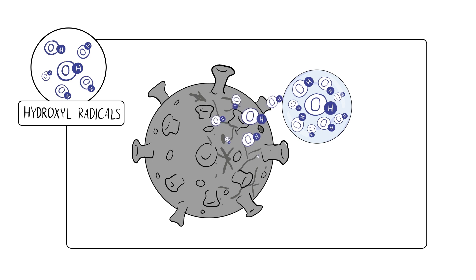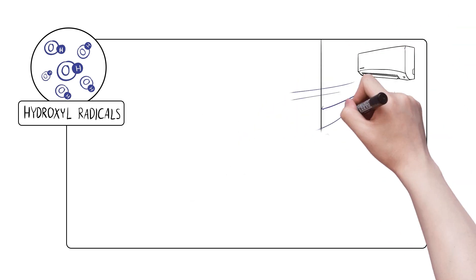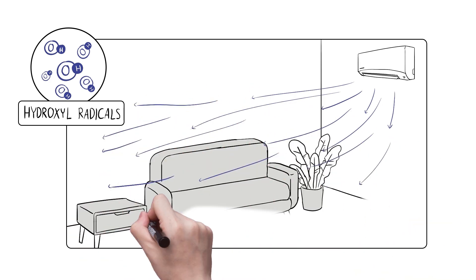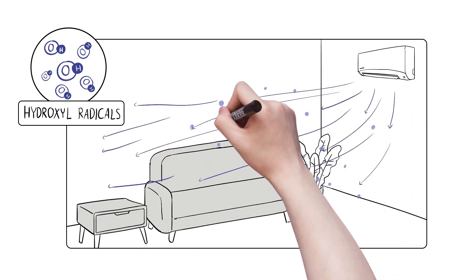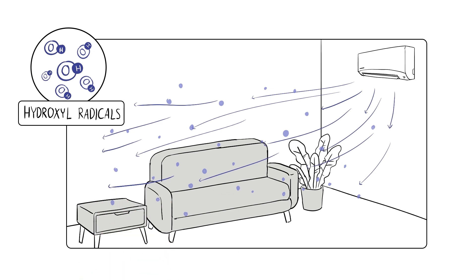which actively inhibits bacteria and viruses in the air and on surfaces. Unlike other technologies, Panasonic NanoEX actively spreads ions through the air and onto surfaces.